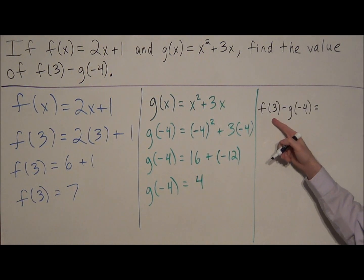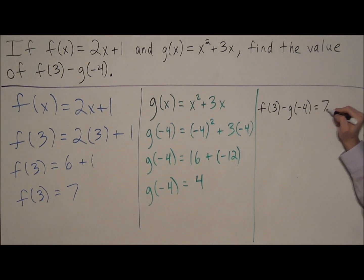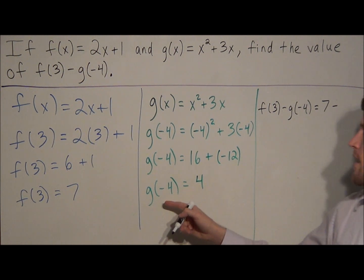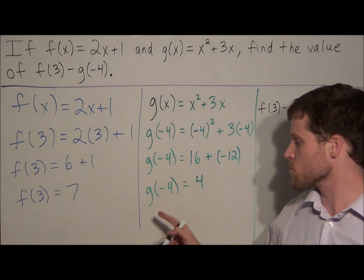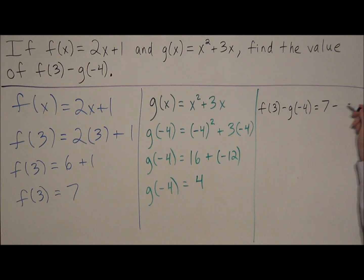So at this step, instead of f of 3, we know f of 3 is equal to 7. So we're going to evaluate 7 minus, and we have g of negative 4 is equal to 4. So we're going to replace g of negative 4 with 4.